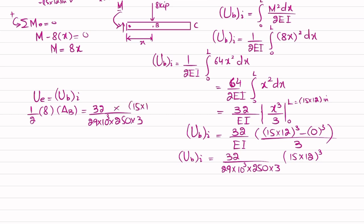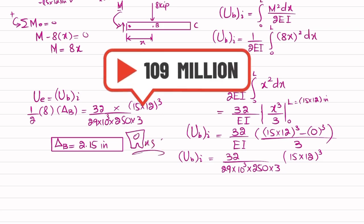multiplied by (15 multiplied by 12) cubed. When you solve this, delta B will come out to be 2.15 inches. So this is the vertical displacement of point B due to the applied load on this cantilever beam.